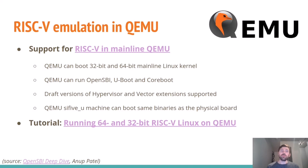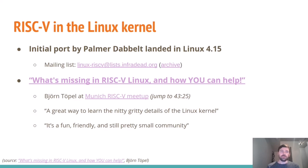RISC-V is well supported in QEMU, so if you don't have hardware you can run either full 64-bit or 32-bit RISC-V Linux in QEMU — there's a nice tutorial linked that gets you going on your PC or laptop. RISC-V has been supported in the Linux kernel since the initial port by Palmer back in Linux 4.15. A great talk from Björn Topol at the Munich RISC-V meetup called 'What's Missing in RISC-V Linux and How You Can Help' noted that RISC-V support in Linux is a great way to learn nitty-gritty kernel details, and it's a friendly, still-small community.